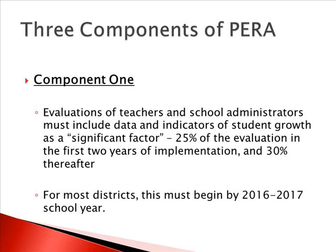PARA basically has three components. The first includes student growth as a significant factor in the evaluations of teachers and school administrators. For the majority of Illinois school districts, this must be implemented by the 2016-2017 school year. In September 2012, at least 300 schools in the Chicago Public School District were required to include this data and indicators of student growth in their evaluations. Any school receiving federal school improvement grants also was required to include this in their evaluations in September of 2012. All remaining Chicago Public Schools needed to include this data by September 2013.